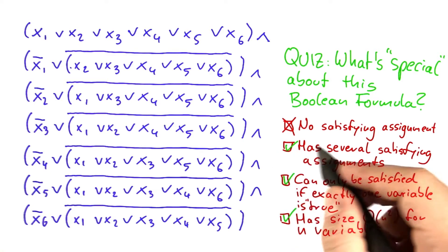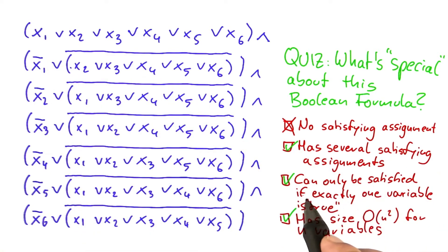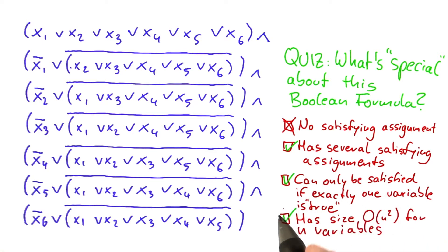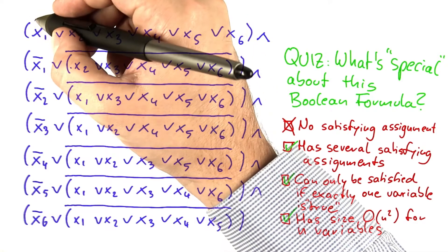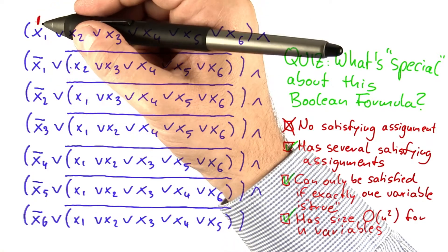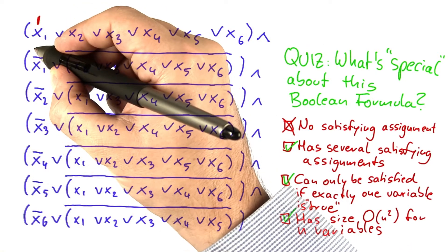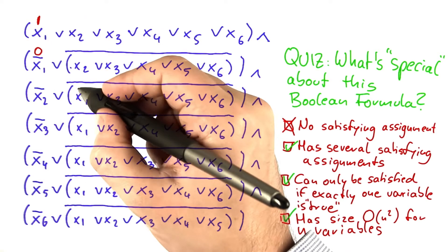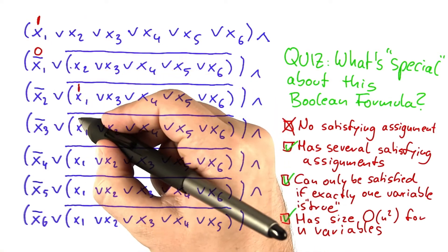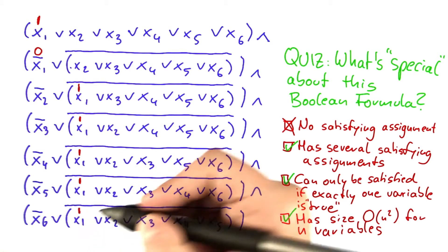Let me explain this. There are several satisfying assignments, but each of those satisfying assignments has the property that exactly one variable is true. For example, let's say that we set x1 to true. Then what will happen is the following: x1 is true, which means this one down here goes to 0, this one goes to 1, this one goes to 1, this one goes to 1, this one goes to 1, this one goes to 1, and this one as well.